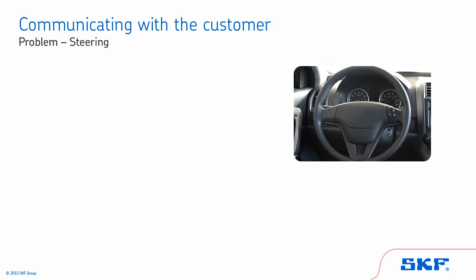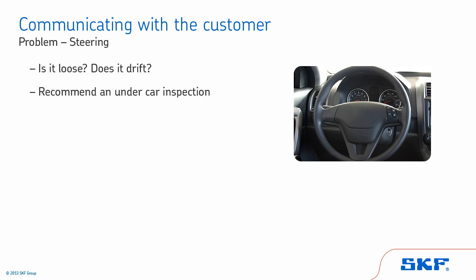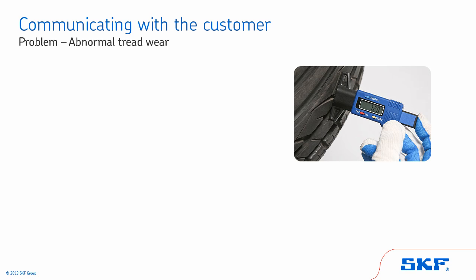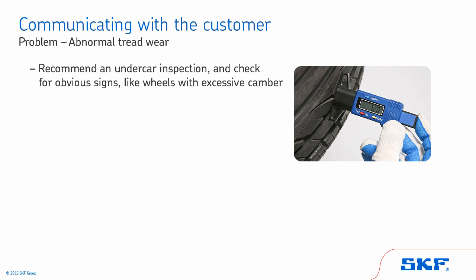Steering issues: if they are having issues with steering, ask whether it is loose or if the vehicle drifts. If so, recommend an undercar inspection, as one or more parts could be worn and in need of replacement — including the bearings and the steering and suspension components. Abnormal tread wear: if the tires show abnormal tread wear, also recommend an undercar inspection.